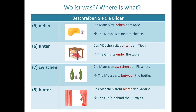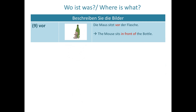'Hinter' means behind: 'Das Mädchen steht hinter der Gardine' — the girl is behind the curtains. 'Steht' also shows placement or position, not just standing. The last one is 'vor': 'Die Maus sitzt vor der Flasche' — the mouse sits in front of the bottle, with no movement involved.